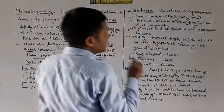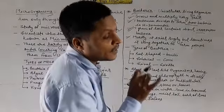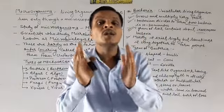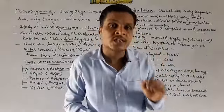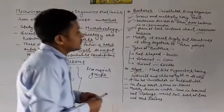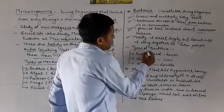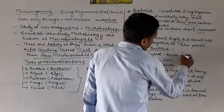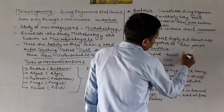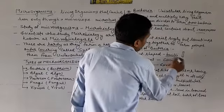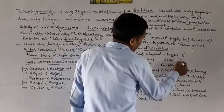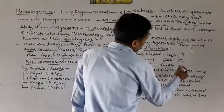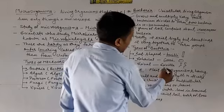Bacteria mostly exist singly, but sometimes they cling together to form a group or chain. There are different types of bacteria: rod-shaped bacteria are called bacilli; spherical-shaped bacteria are called cocci; and spiral-shaped bacteria are called spirilla.